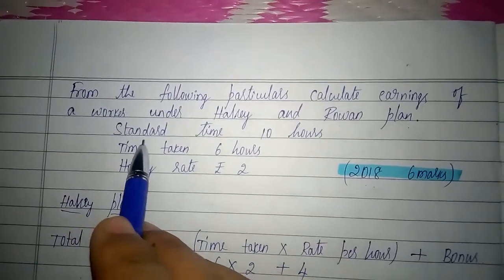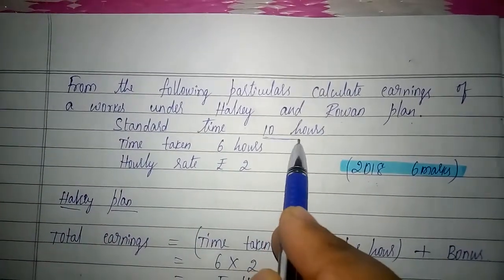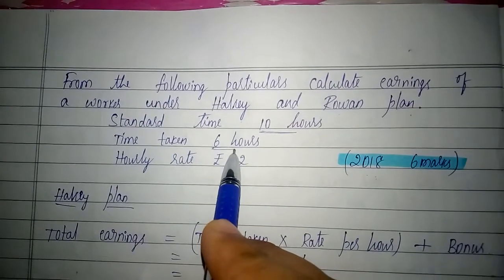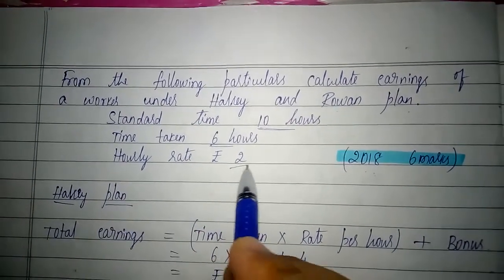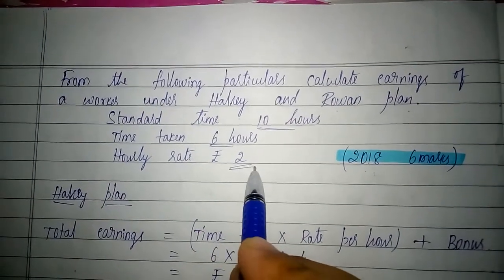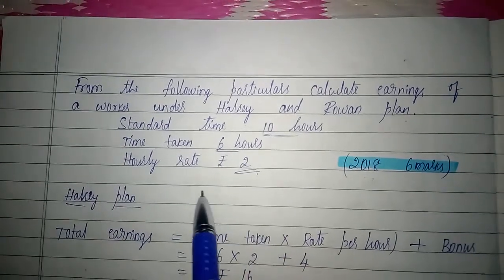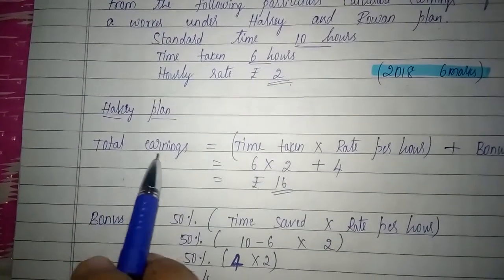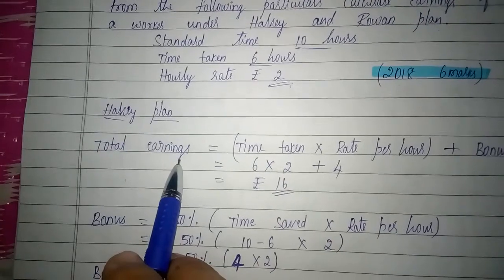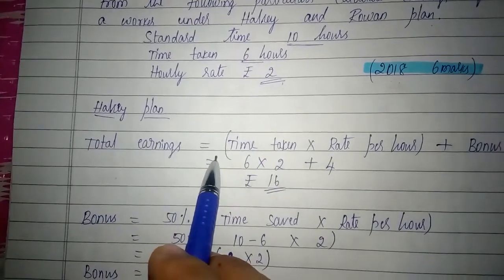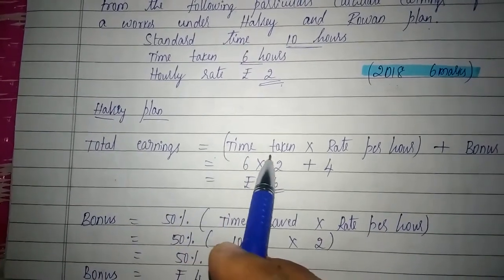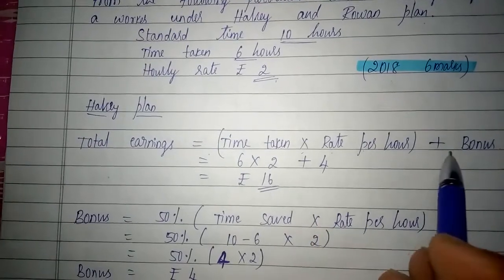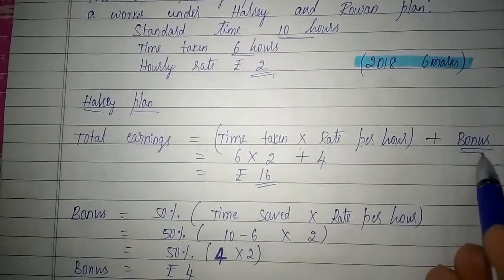The given data: standard time is 10 hours, time taken is 6 hours to complete the work, and the hourly rate is Rs. 2 per hour. Under Halsey plan, total earnings can be calculated by multiplying time taken into rate per hour and adding the bonus.